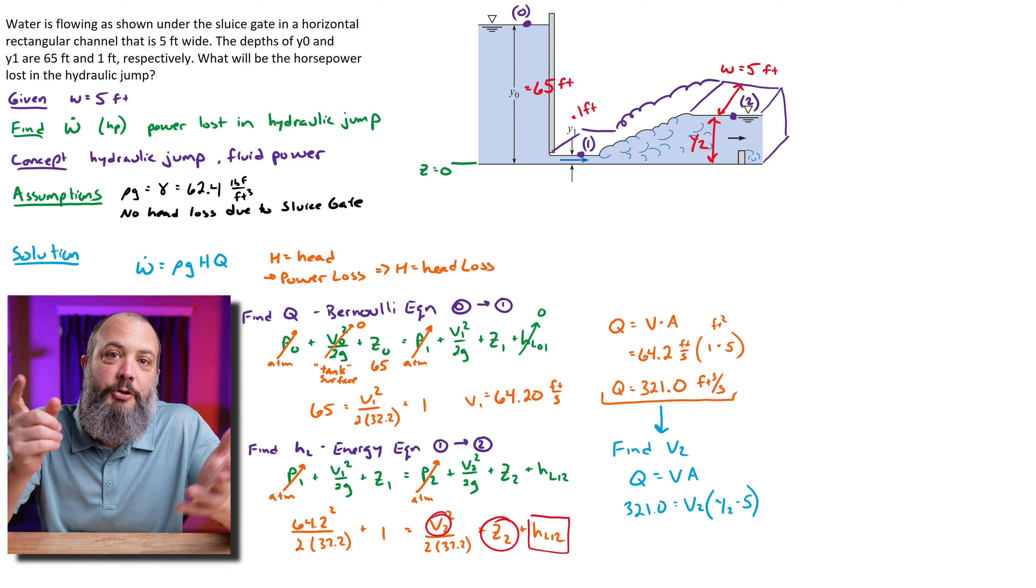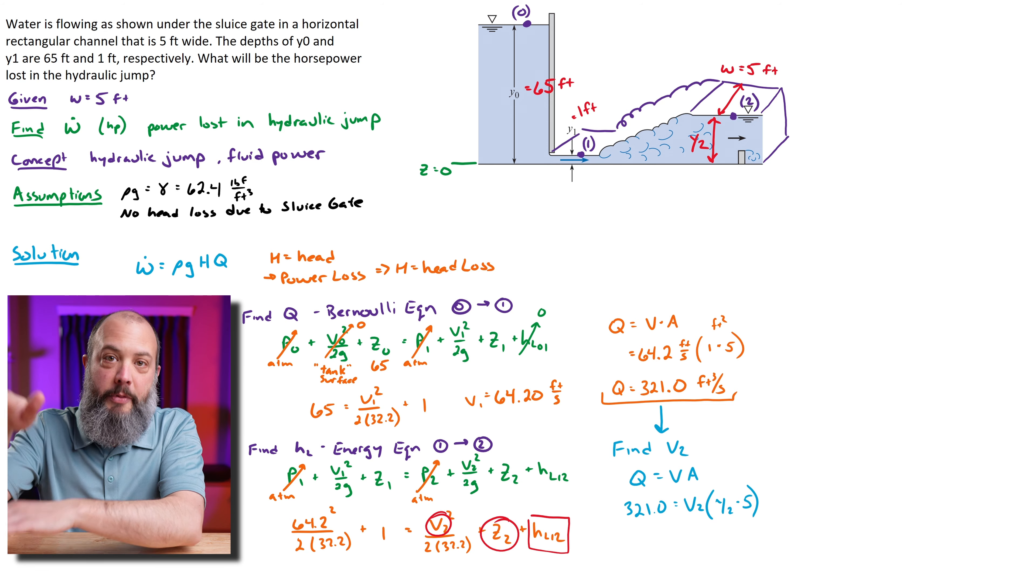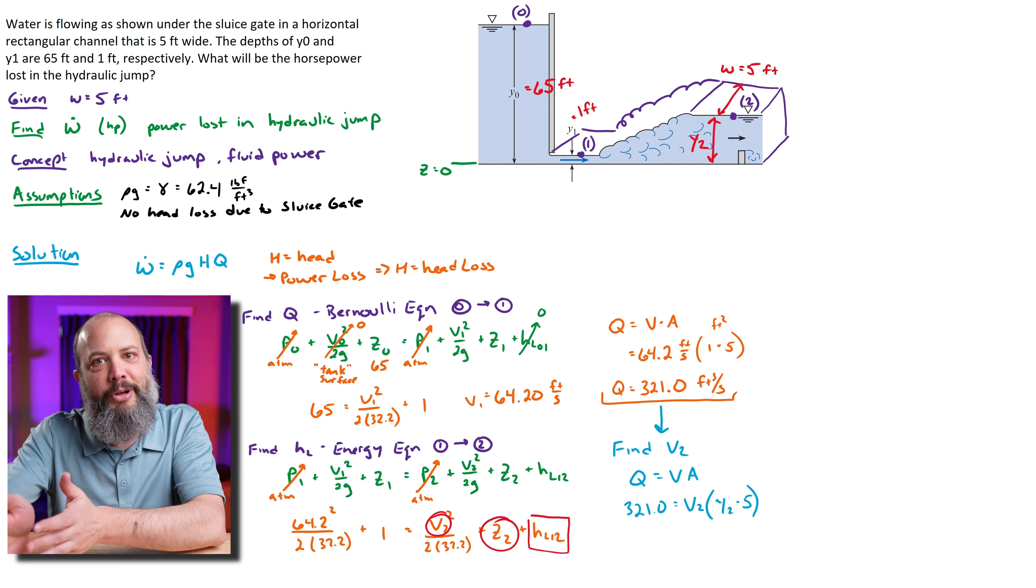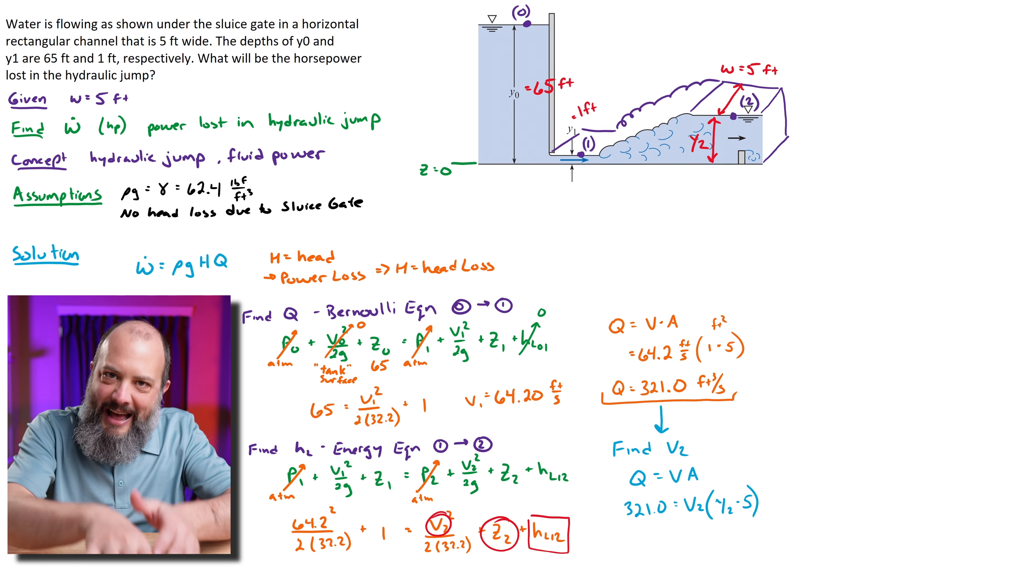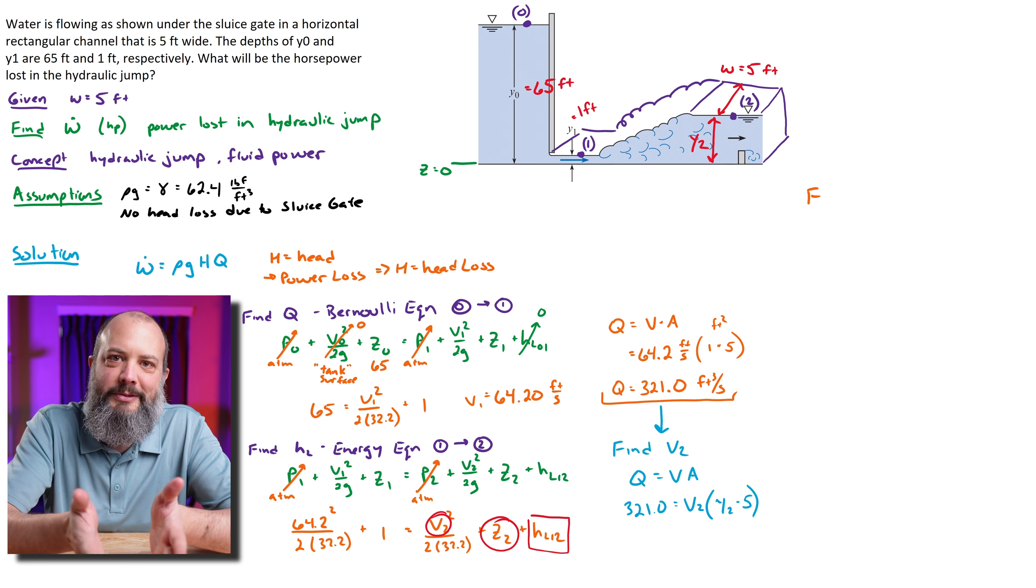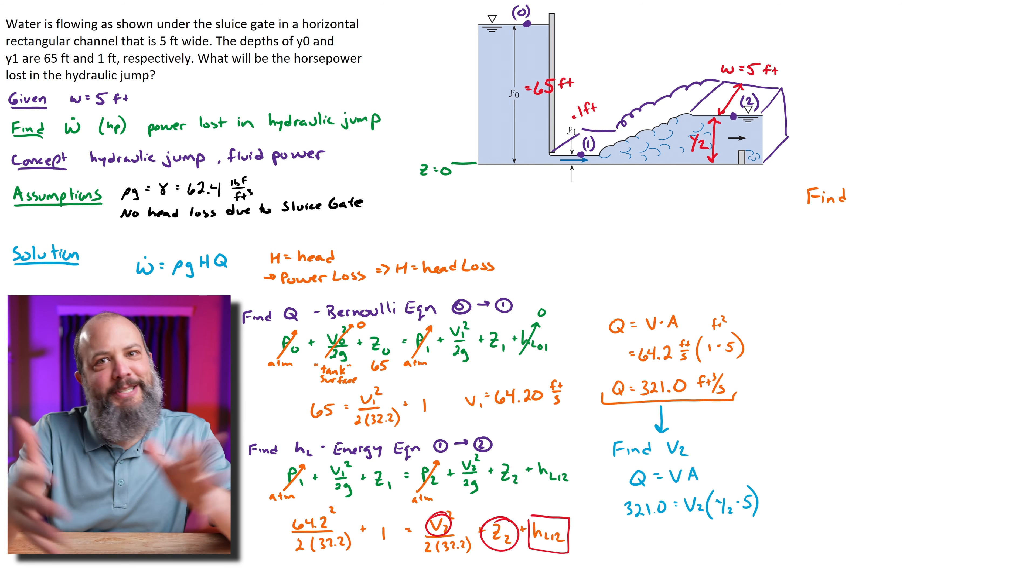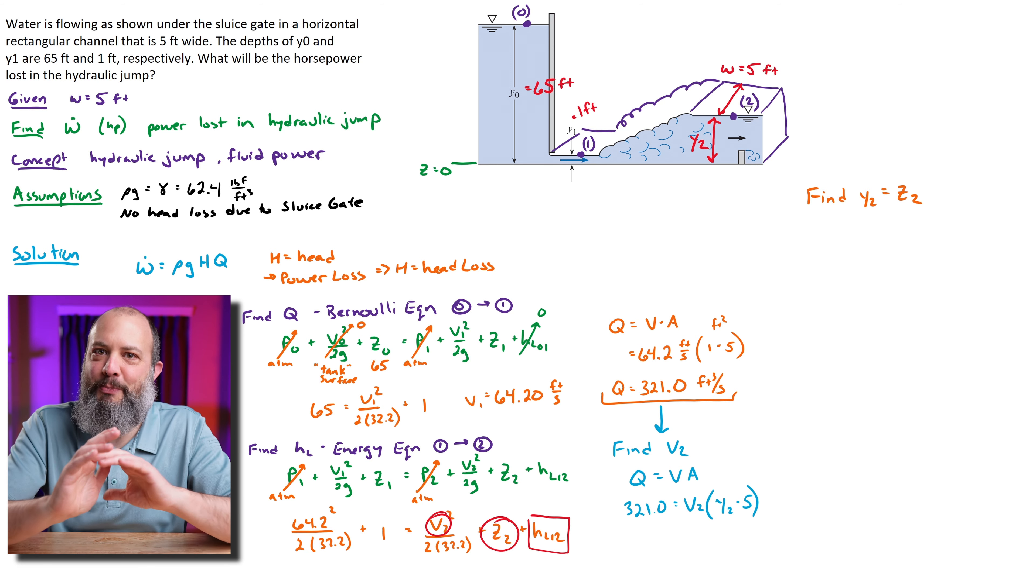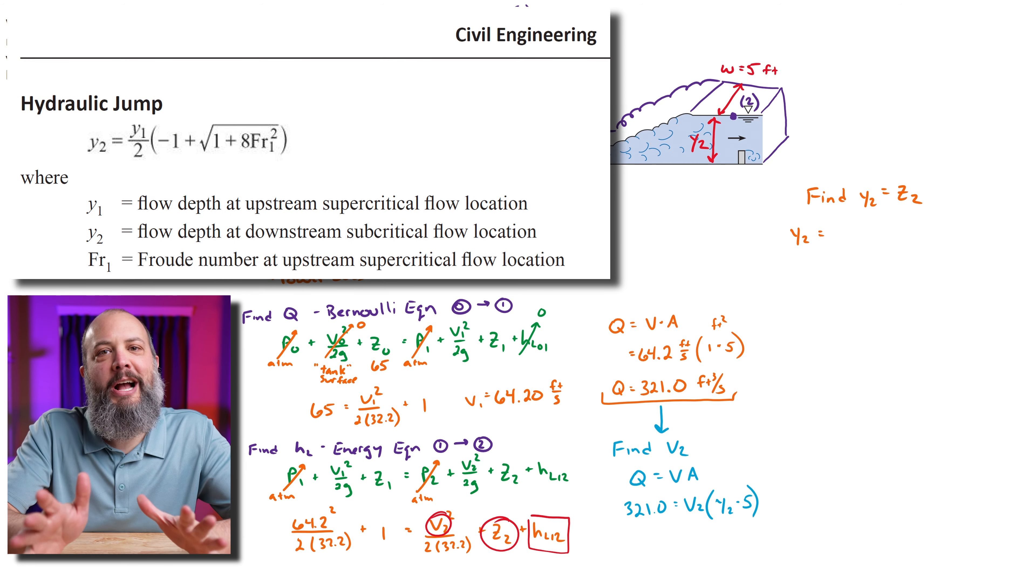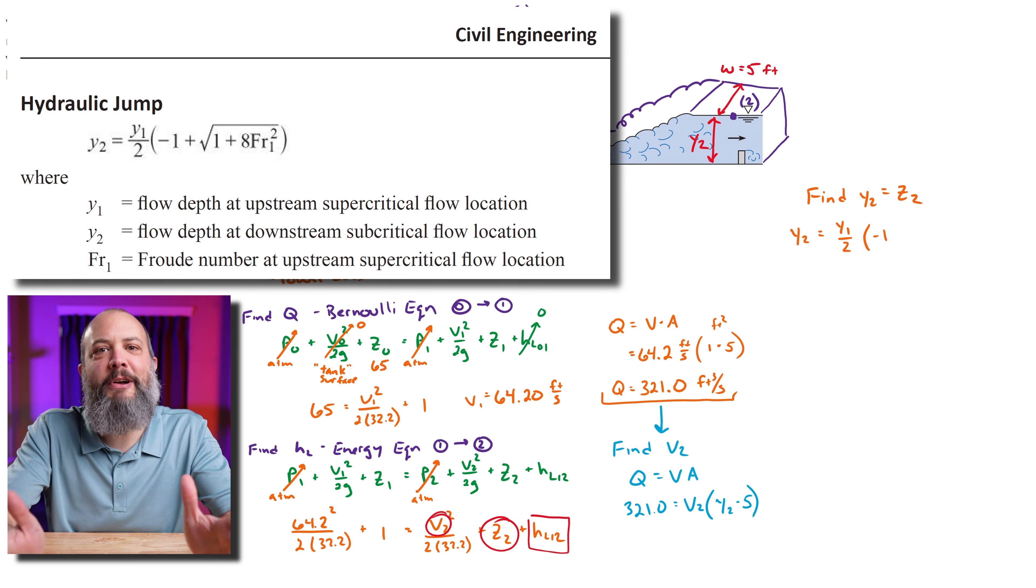But this does give me some direction. If I can find the depth—the height at point 2—then I can plug that into this continuity equation to get velocity at point 2. And then with that, once I have height and velocity, then I'll be able to go back to the energy equation and get the head loss. So this is finally steering me back around to the hydraulic jump depth equation, which you could probably guess was going to be used eventually.